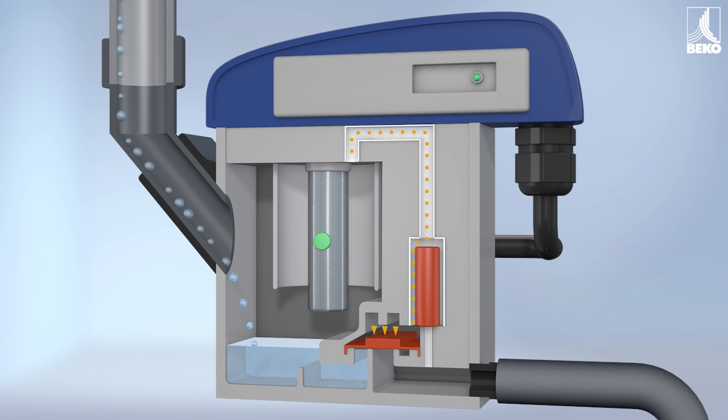The valve switches back, the membrane closes and the cycle begins again. In actual operation, the solenoid valve switches so quickly that no valuable compressed air escapes.